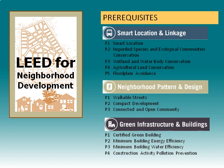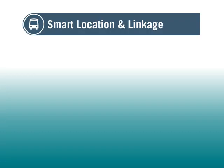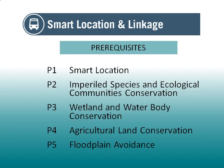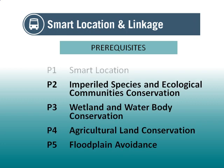The LEED ND rating system is divided into three major credit categories, each of which has its own prerequisites. The first category is Smart Location and Linkage. There are five prerequisites in this category. Four of these have to do with physical on-site characteristics — sensitive land areas that should be protected from development.